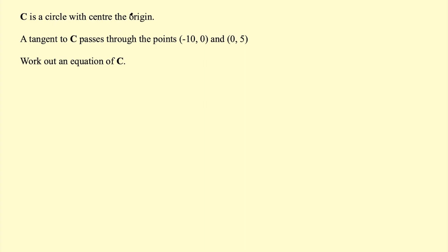This question says C is a circle with center the origin. A tangent to C passes through the points (-10, 0) and (0, 5). Work out an equation for C.